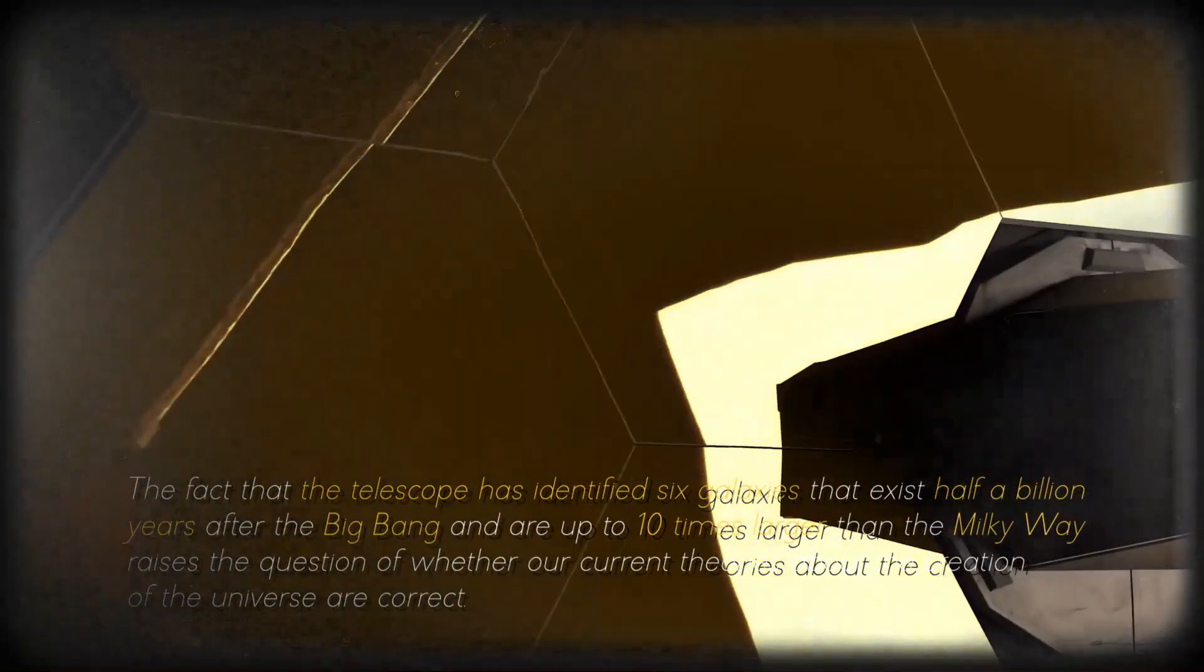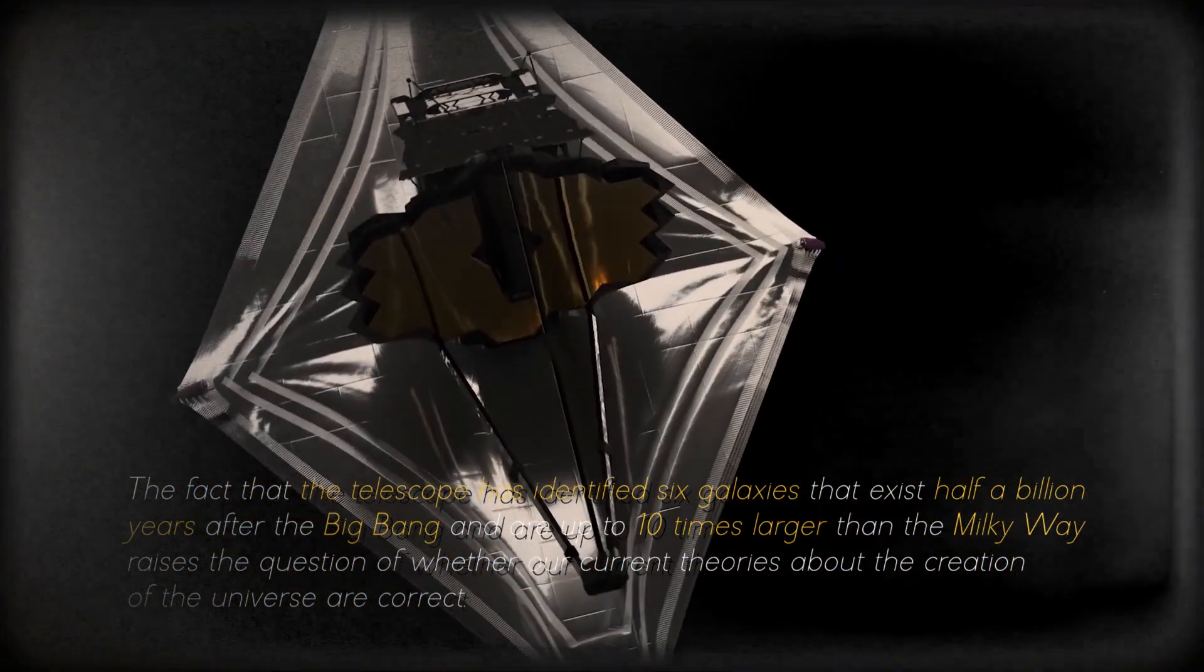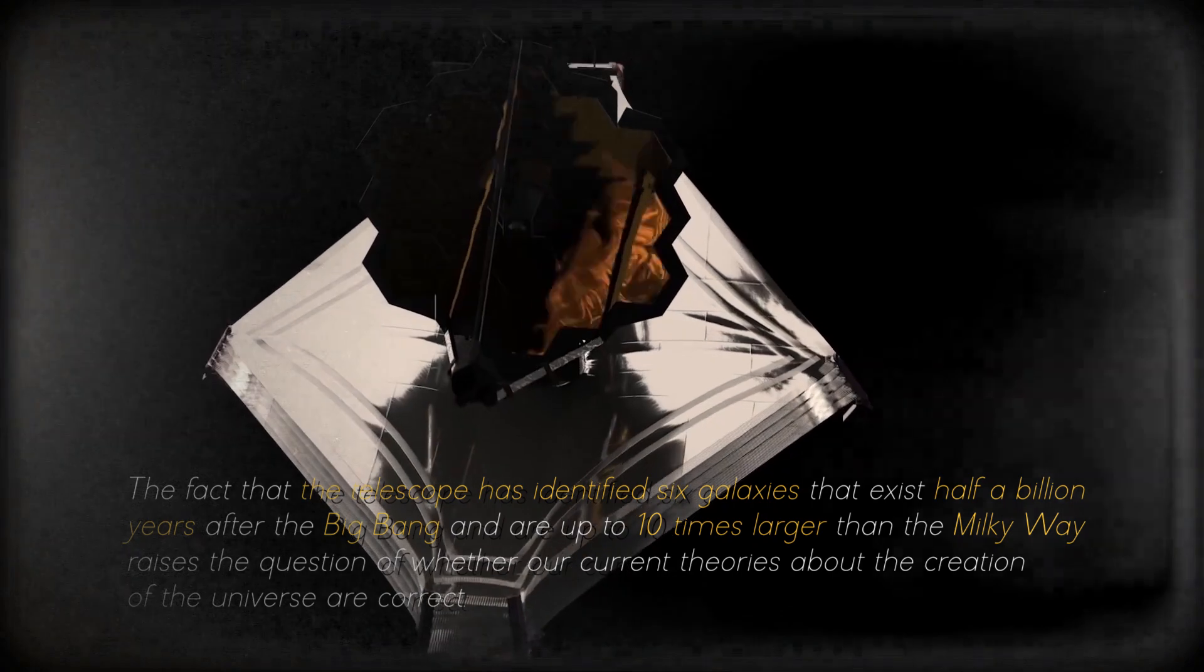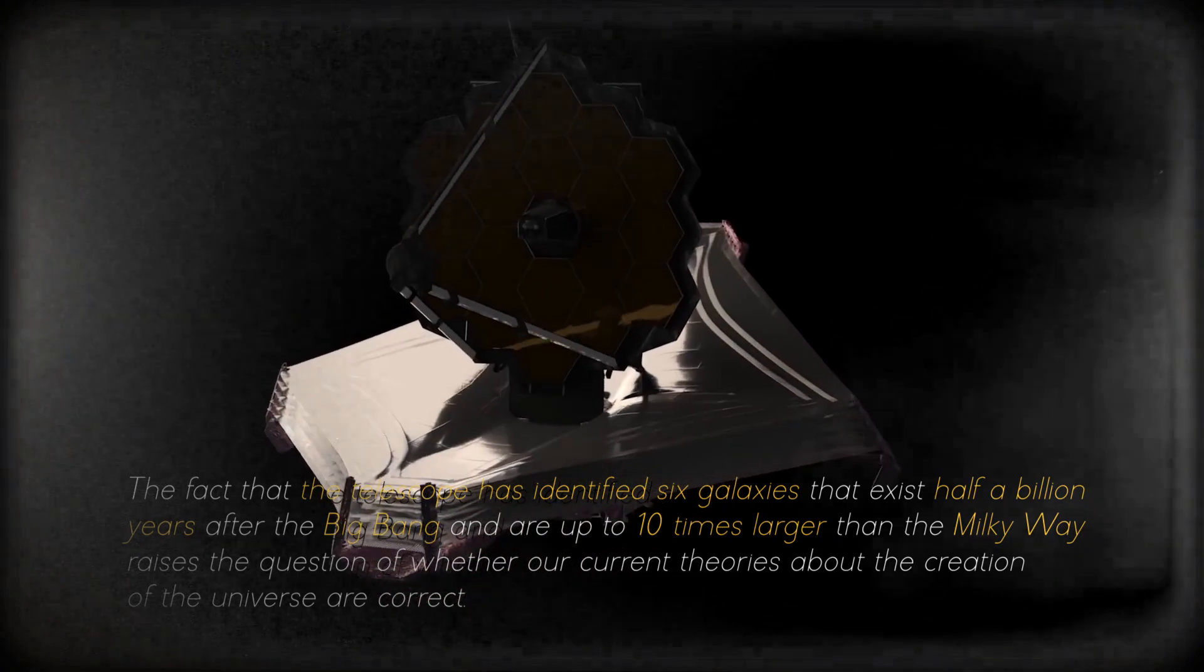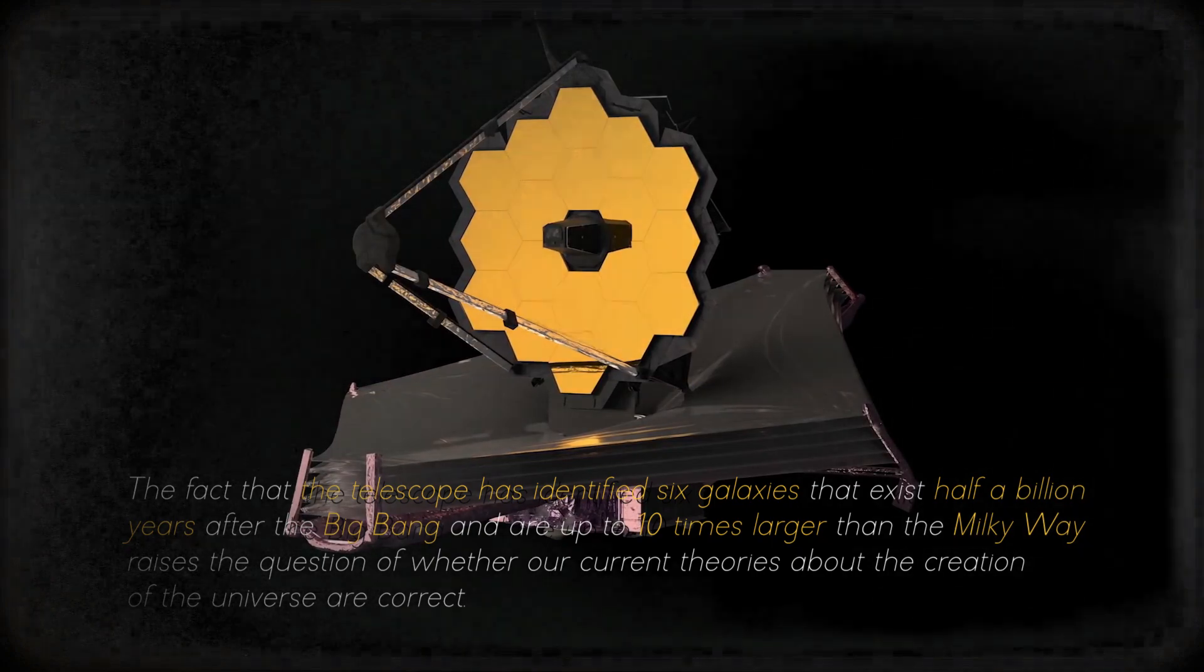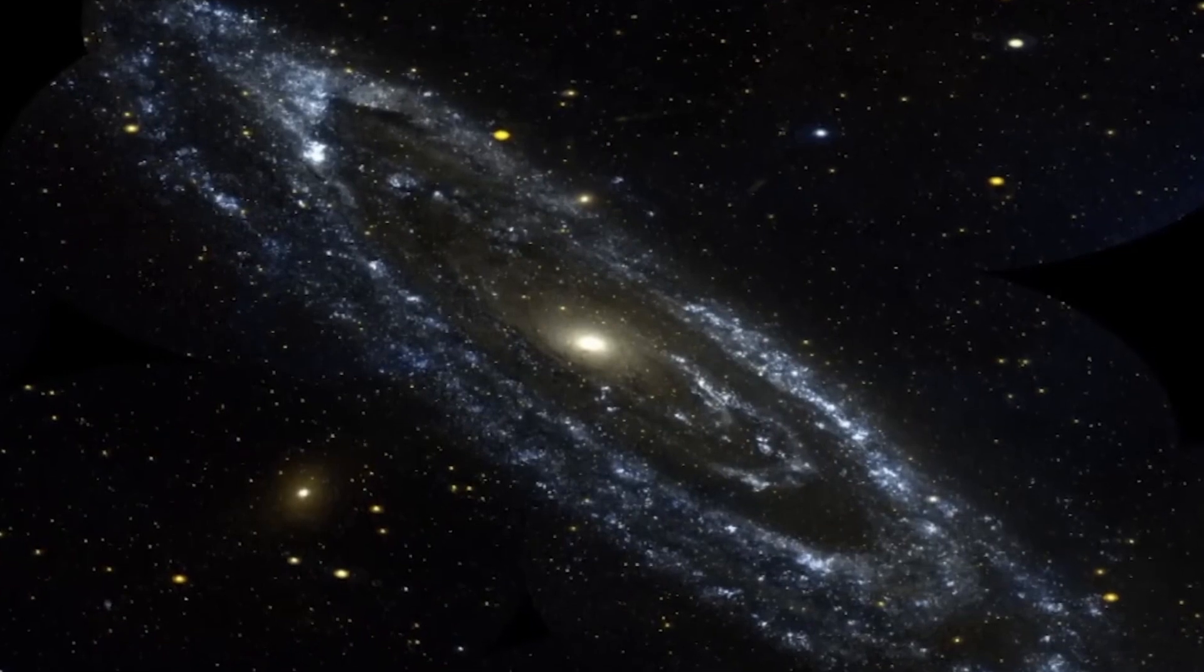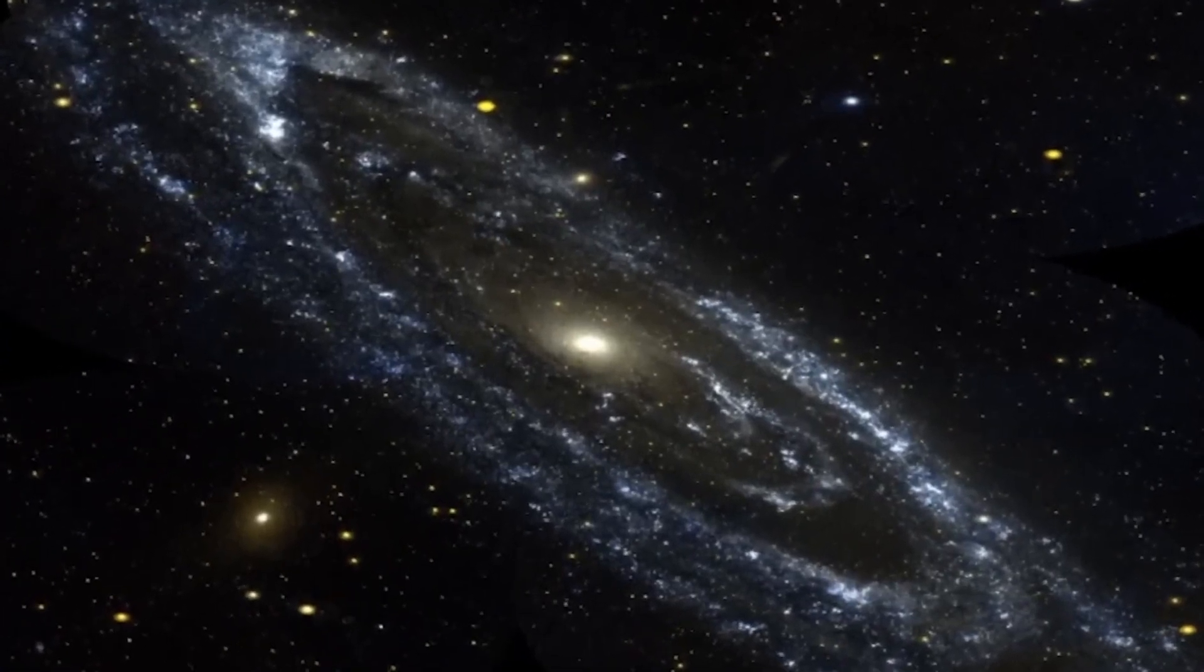The fact that the telescope has identified six galaxies that exist half a billion years after the Big Bang and are up to ten times larger than the Milky Way raises the question of whether our current theories about the creation of the universe are correct. Kaku explained that it takes billions of years to create a galaxy like the Milky Way, so it is strange to find such large, young, primordial galaxies. This discovery may require us to revise and rewrite textbooks on the beginning of the universe.